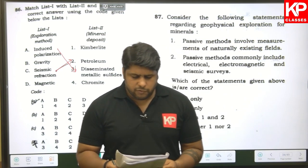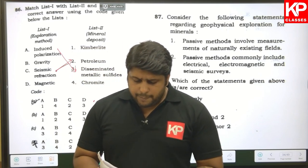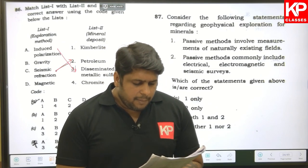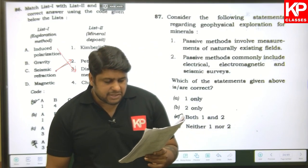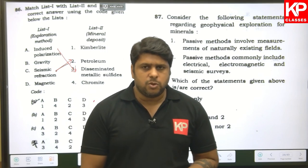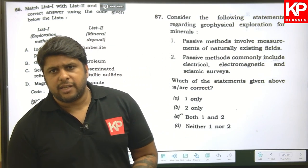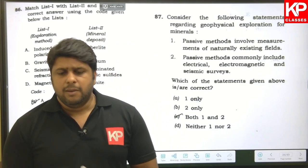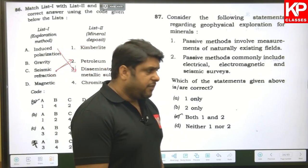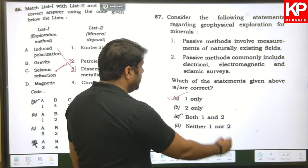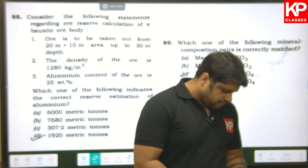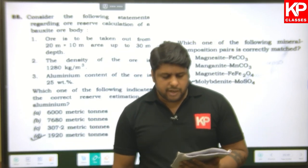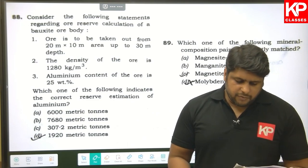Question eighty-seven: regarding geophysical exploration — passive methods involve measurements of naturally existing fields (correct). However, passive methods commonly include seismic surveys — this is wrong, because seismic surveys require a source to produce disturbance and are therefore active, not passive. So only statement one is right, and option A is correct.